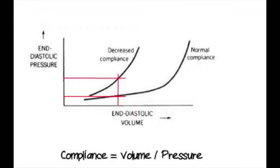The decrease in ventricular compliance during the re-warming period causes a decrease in end-diastolic volume at any given end-diastolic pressure. This means that a normal wedge pressure in the early postoperative period represents a low end-diastolic volume. Therefore, when cardiac output is low and the wedge pressure is not elevated, volume infusion is indicated.